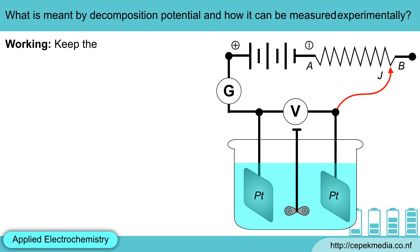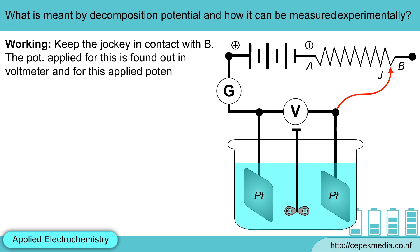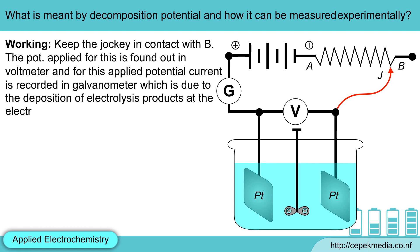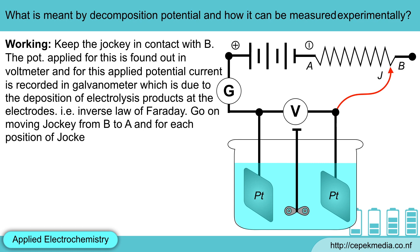Keep the jockey in contact with B. The potential applied for this is found out in voltmeter and for this applied potential, current is recorded in galvanometer, which is due to the deposition of electrolysis products at the electrodes. That is, inverse law of Faraday. Go on moving jockey from B to A and for each position of jockey, we will find out the value of current.